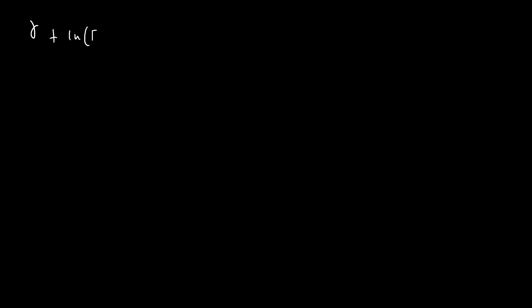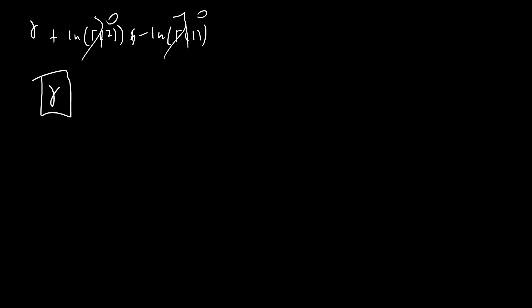Overall, the answer is γ plus ln(Γ(2)) minus ln(Γ(1)). Since Γ(2) = 1, the log goes to zero, and Γ(1) = 1 as well, so that also goes to zero. Our overall answer is just γ, the Euler-Mascheroni constant. Let's go ahead and look at another method to evaluate this integral.